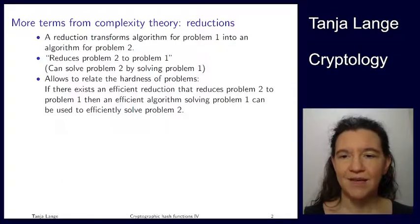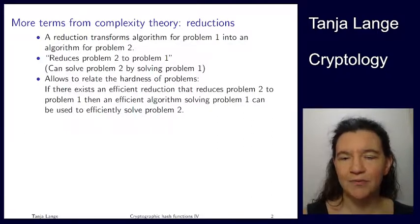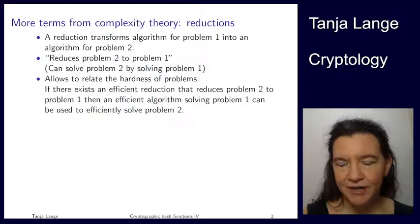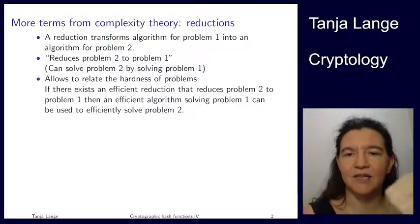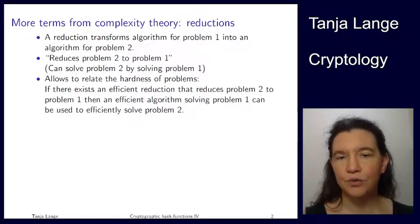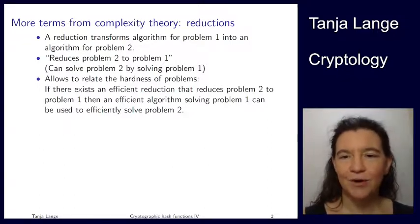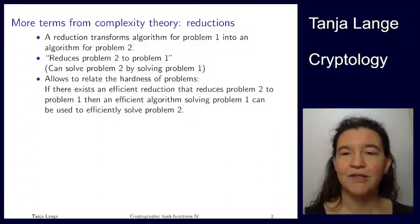Sometimes when students write this down in homework or exercises, this direction gets flipped. So if we can use an algorithm for problem one to solve problem two, then we've reduced problem two to problem one — just as the mathematician reduced the problem of extinguishing the fire under his desk to extinguishing the fire in the corner of his office.